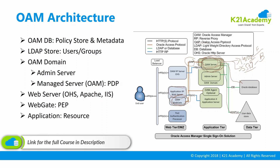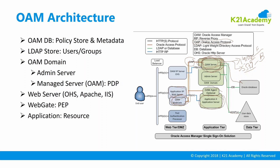WebGate communicates using a protocol called Oracle Access Protocol (OAP), which is Oracle's proprietary protocol. Then you have the application you're trying to protect via single sign-on — it could be OBIEE, Portal, a custom application, or E-Business Suite. You configure a web server in front of that application and put a WebGate on it. This reverse proxy talks to Oracle Access Manager through the front-end channel on port 14100.